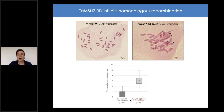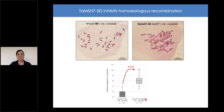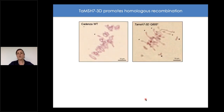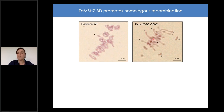Counting across a high number of cells, we observed a clear 5.5-fold increase in chiasma frequency within the mutant, representing genome-wide homeologous recombination. This demonstrates that MSH7-3D inhibits homeologous recombination in wheat. When looking at the impact on homologous recombination in wheat wild-type versus the absence of MSH7-3D, we found rod bivalents and even univalents, meaning homologous crossovers are actually missing in these mutants.